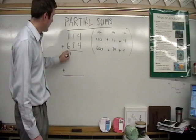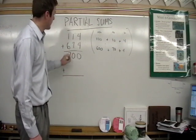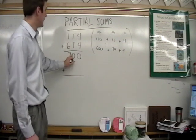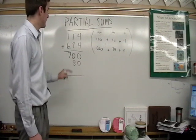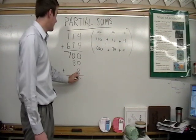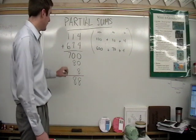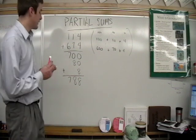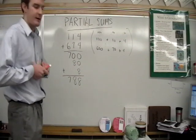100 plus 600 is 700. 10 plus 70 is 80. 4 plus 4 is 8. Zero and eight is 8. Zero and eight is 8. And 7 is 788 for your correct answer.